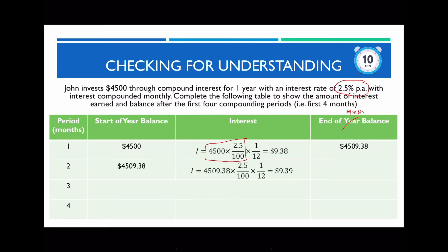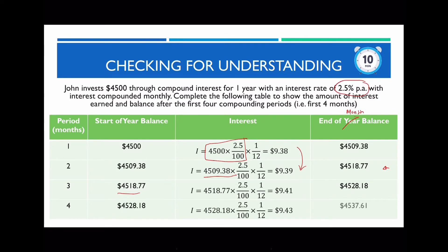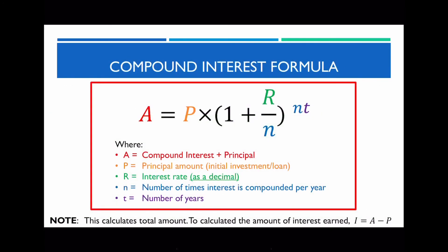This $4,509.38 becomes the starting balance and new principal for month two. Multiply by the interest rate then by 1/12 to get the monthly interest of $9.39. Notice the interest gradually rises — this is a common characteristic of compound interest. Continue this process throughout the whole table. Remember, this type of question often appears on your post-test or CAT, so make sure you note that you need to multiply by 1/12 when the question asks for monthly compounding.